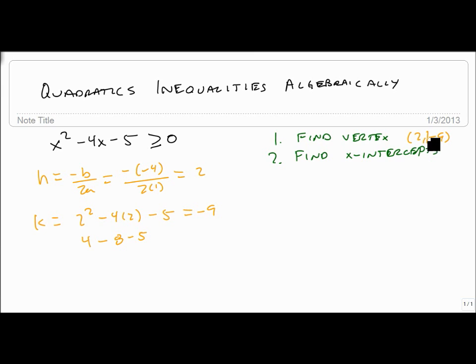So my vertex is at 2, minus 9. And what's important here is this value right here. The k value is what's really important about that vertex.